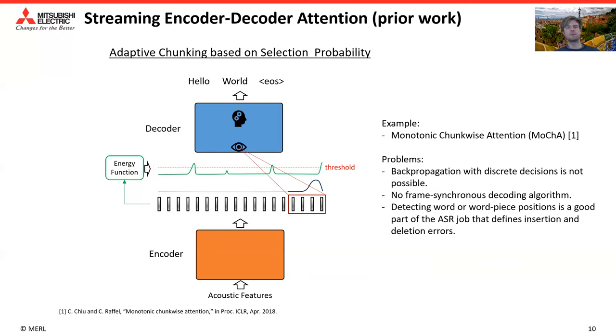This has some non-optimalities as well. For training, for example, we like to do discrete decisions with this energy function, but this is hard to train using backpropagation. We need to use some tricks to make this trainable. Also, there is no frame-synchronous decoding algorithm available for this. And arguably, detection of word or word-piece positions is a good part of the ASR job already, which in the end defines insertion and deletion errors that our system is making.